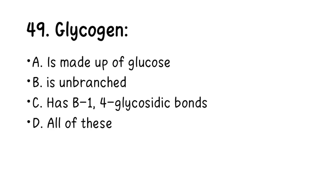Number 49. Glycogen: A. Is made up of glucose, B. Is unbranched, C. Has beta-1,4 glycosidic bond, D. All of these. Glycogen is indeed made up of glucose — correct. Glycogen is unbranched — no, glycogen is multi-branched. It has beta-1,4 glycosidic bond — no. So the right answer is A, glycogen is made up of glucose as its monomeric unit.